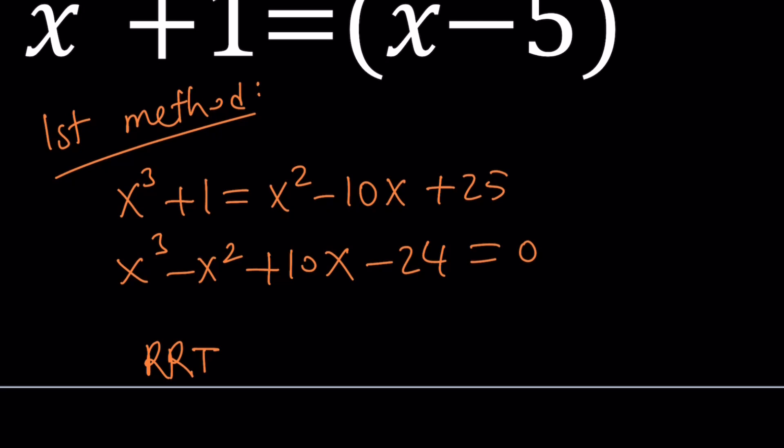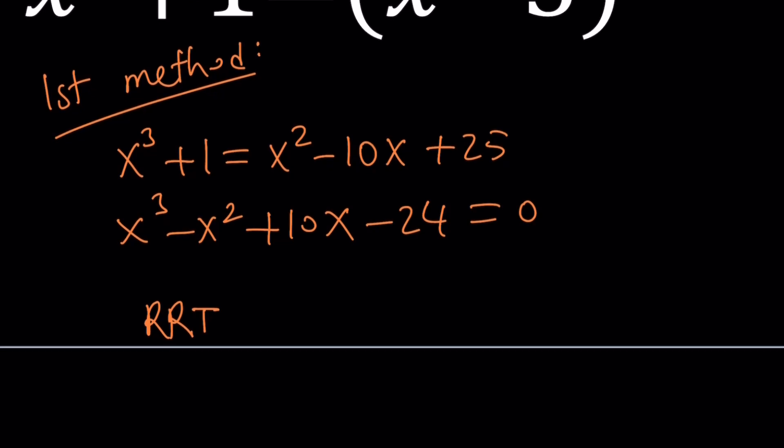Are there any rational roots? I have no idea, I haven't checked it. But you can definitely check. For example, suppose x is equal to 1, right? 1 is a possibility, plus minus 1, plus minus 2, plus minus 3, plus minus 4, plus minus 6, plus minus 8, plus minus 12, and plus minus 24.